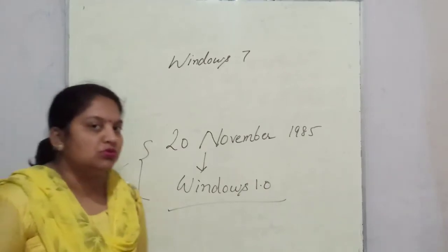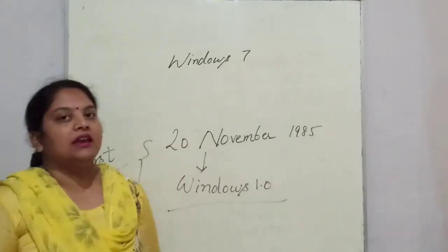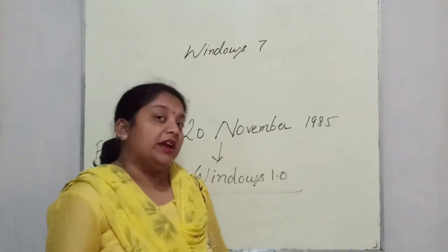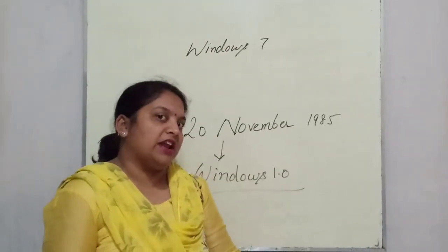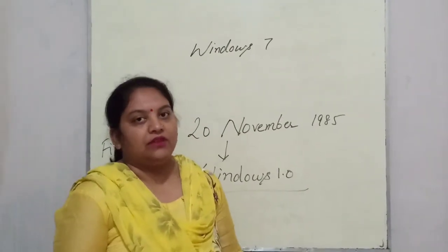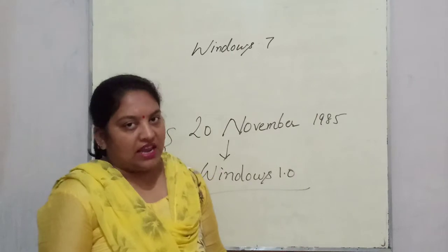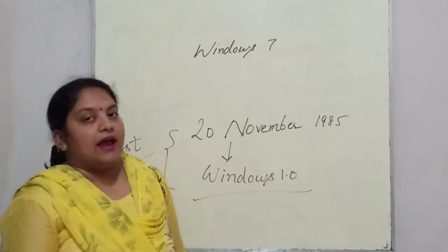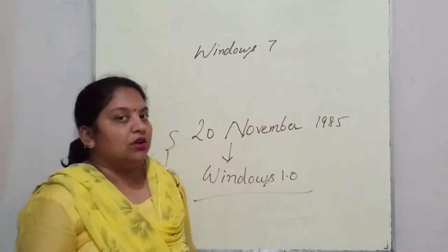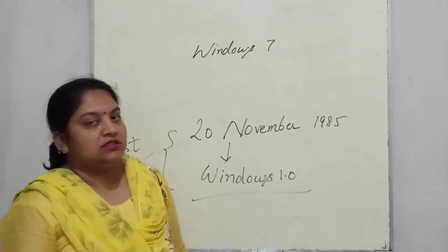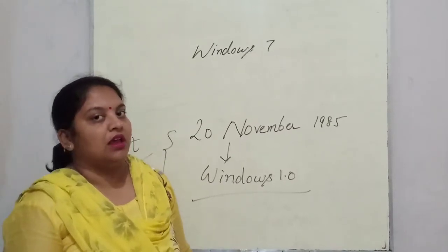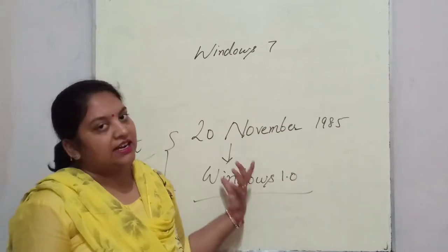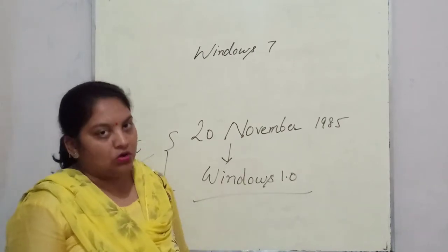After that Windows 2, then Windows 95 came in 1990, so it became popular at that time. After that Windows 98, which was also a popular version, and after that Windows XP, and so many versions — 7, 8, 10. So today I will discuss about Windows 7.